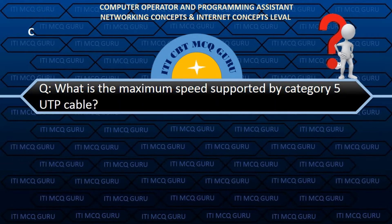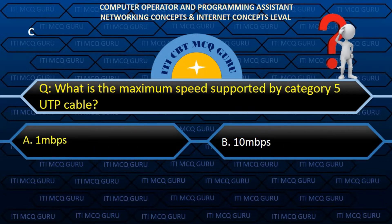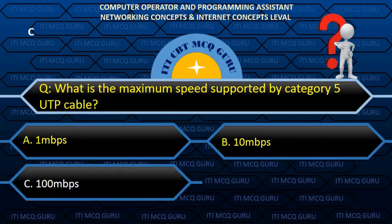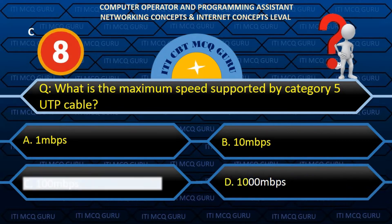What is the maximum speed supported by Category 5 UTP cable? C. 100 Mbps.